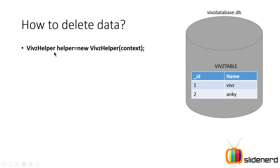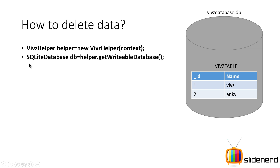Here we have our class VipsHelper which contains the schema of our database — the column names, the CREATE statement, the onUpgrade method — and everything inside, which extends SQLiteOpenHelper. Then there's our SQLite database object that represents our physical database stored on the device.